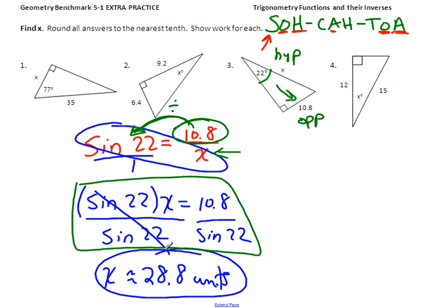Alright, number 4. There's my angle. I have an adjacent side. I have my hypotenuse. So I look up above, adjacent and hypotenuse is right here again, cosine. So cosine of the angle equals A over H. It's a second letter over the last letter. So A is 12 and my H is 15.